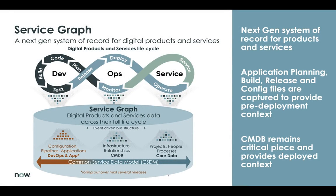ServiceGraph, first of all, it's not a product or anything you'd buy. ServiceGraph itself is a strategy to provide that next-gen system of record for digital products and services across the platform. It includes data coming from the CMDB, but also data not typically in a CMDB, such as configuration data coming from config tools like Chef, Puppet, Ansible, or even Terraform, or tools used in the CI/CD process, such as code repositories that capture changes in the code, because that visibility is needed as you start to use these agile automated ways of delivering services.